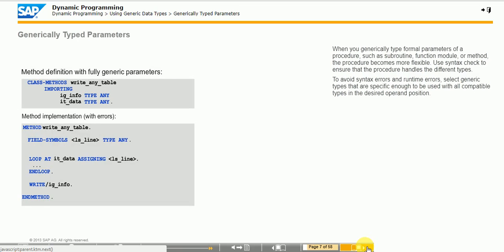The syntax check ensures that the system passes only actual parameters with compatible types to generically typed formal parameters. When generically typed parameters are addressed in ABAP statements, the system waits until runtime to determine whether the type of the underlying data object or its current content is logical in the respective operand position. If conflicts occur, the system raises runtime errors that are not caught in most cases.